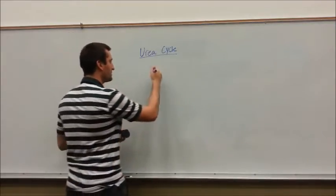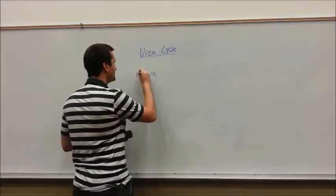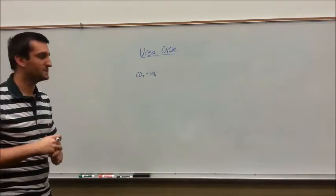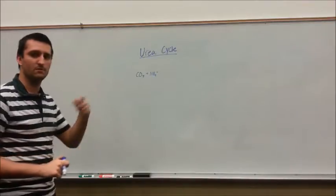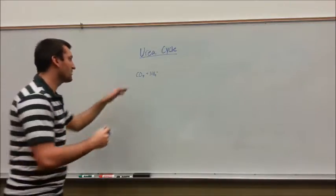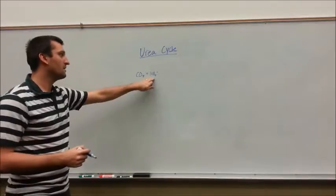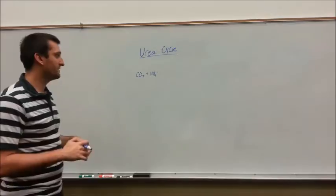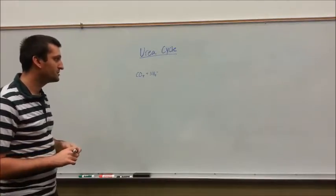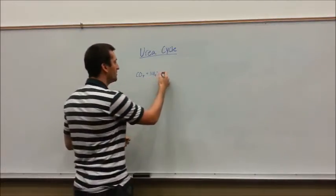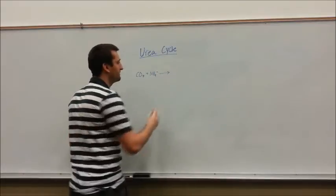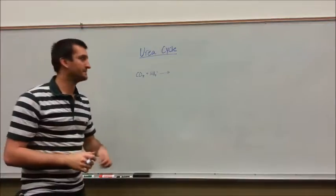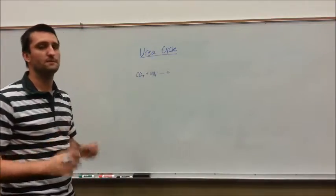We're going to take that NH4 and combine it with CO2. Where do we get CO2? The TCA cycle. We spit out two CO2s every time we spin that TCA cycle. So we have plenty of CO2 to get rid of. We have our nitrogen that's formed by an amino acid breaking down, giving up its nitrogen group. These two will go together to form a molecule. And this is going to be the rate limiting step of urea cycle, the most important step.